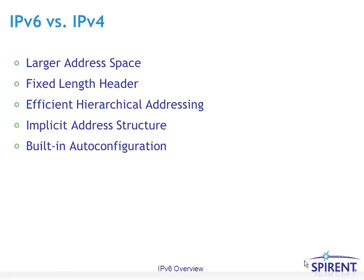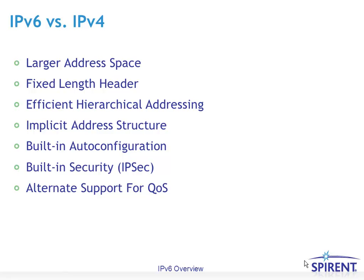IPv6 has built-in auto-configuration — IPv4 evolved to that with DHCP, but IPv6 has it from the beginning. There's also built-in security using IPsec. IPv6 has alternate QoS support: stateless class-of-service using differentiated services and priority bits, as well as stateful integrated services using the flow label — an MPLS-like implementation for IPv6. Finally, by default IPv6 supports bigger packets, with a default MTU of 1280, because IPv6 was designed at a time when links were far better than when IPv4 was conceived in the late 1970s.